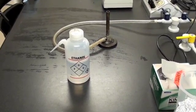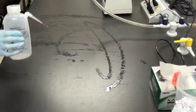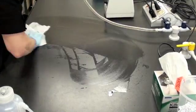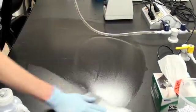We're going to repeat the process with ethanol. Again, spraying, wiping, and waiting for the ethanol to evaporate. When the ethanol has evaporated, we'll light the Bunsen burner.